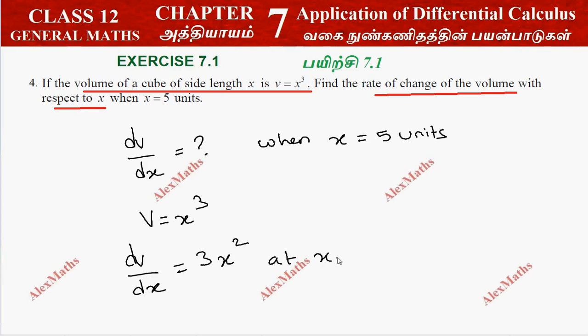At x is equal to 5 units, this value is 3 into 5 square. 5 square is 25, 25 into 3 is 75.